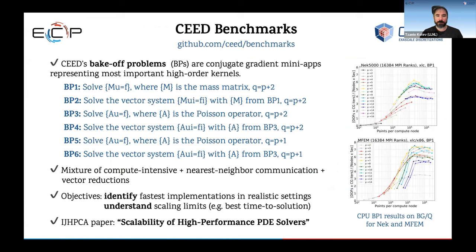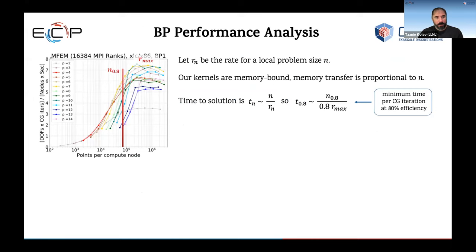We use that to develop kernels and we have a number of benchmarks that we call bake-off problems. They're called that because we use them to compare codes, and we had a paper on this where a number of codes compared performance. The plots for these bake-off problems show problem size per node per core or per GPU on the x-axis, and throughput — the number of degrees of freedom processed per second — on the y-axis.